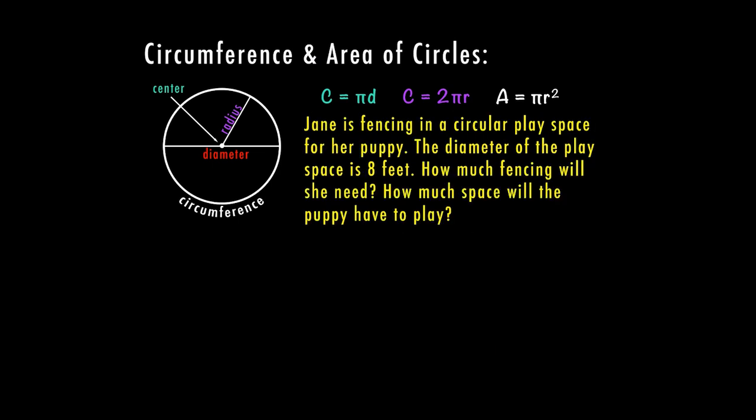For this first example, Jane is building a fence in a circular play space for her puppy. The diameter of the play space is eight feet. How much fencing will she need? And then also how much space will the puppy have to play? Sometimes you might need to draw yourself a picture. So in this case, if we have this circular play space and we know that the diameter, which is the distance across, is eight feet. That means that my radius is half of that. So that would be four.